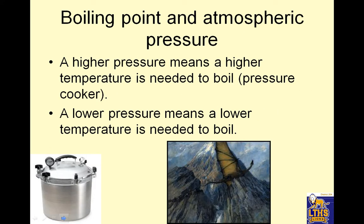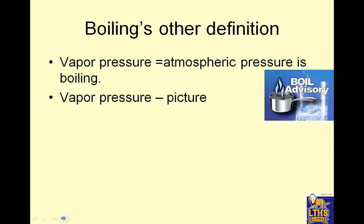Boiling point and atmospheric pressure: a higher pressure means a higher temperature is needed to boil — like a pressure cooker. Normally water boils at 100 degrees Celsius, but you could make it boil at 200 degrees Celsius by increasing the pressure. A lower pressure means a lower temperature is needed to boil — like on top of a mountain, the pressure squeezing it into the liquid state is a lot smaller than down at lower elevations where there's a taller column of air squeezing it down.